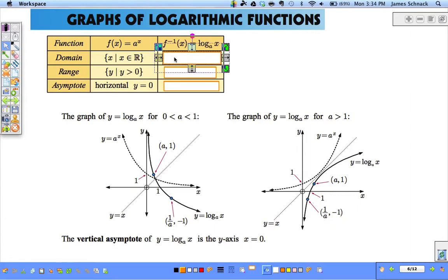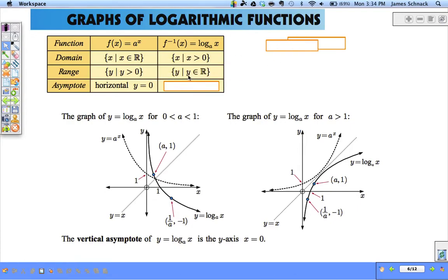Well, domain and range flip-flop for inverses. So the domain of a logarithm equation becomes a set of all X's such that X is greater than zero. The range is the set of all Y's such that Y is an element of the reals. And instead of having a horizontal asymptote, we have a vertical asymptote.